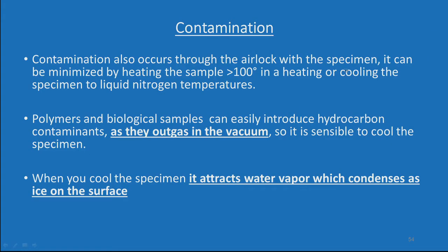Contamination also occurs through the air lock with the specimen. It can be minimized by heating the sample above 100 degrees or by cooling the specimen to liquid nitrogen temperatures. Polymers and biological samples can easily introduce hydrocarbon contaminants as they outgas in the vacuum, so it is sensible to cool the specimen. When you cool the specimen it attracts water vapor which condenses as ice on the surface. These are general guidelines within the column, and we will discuss further aspects when we go to the sample preparation class.